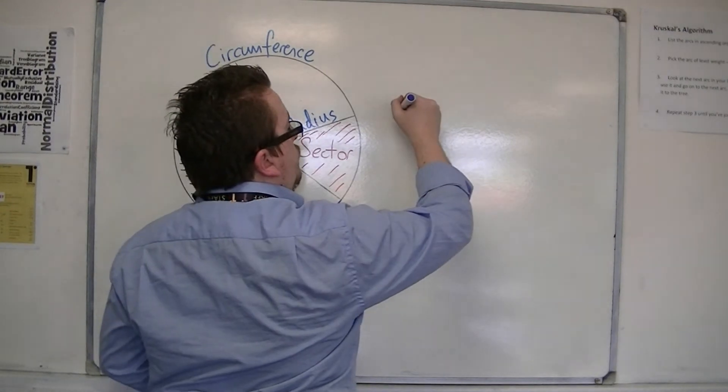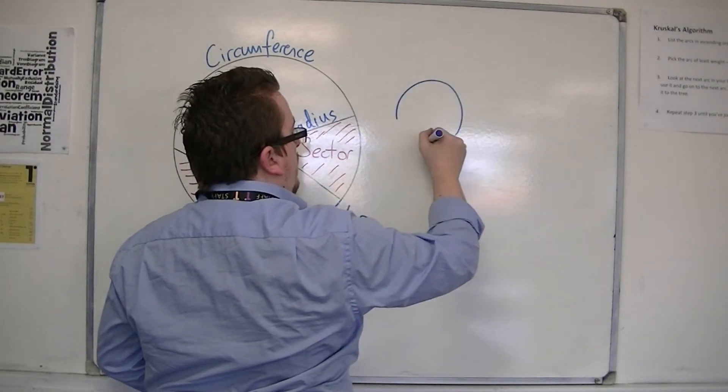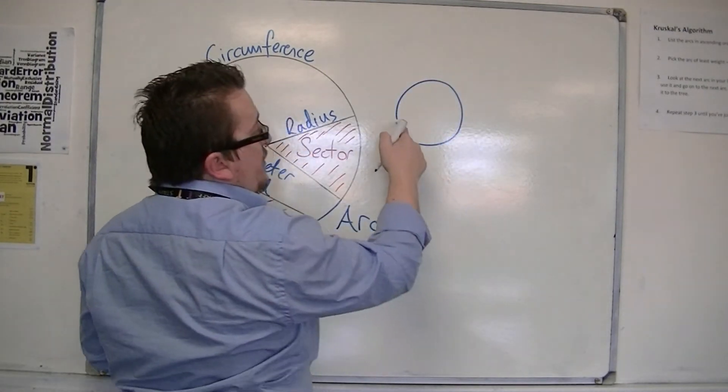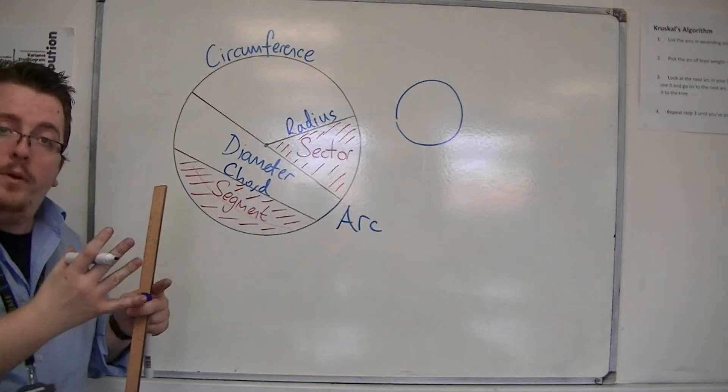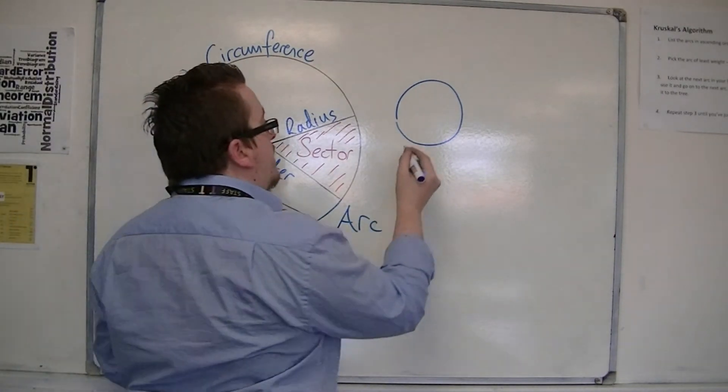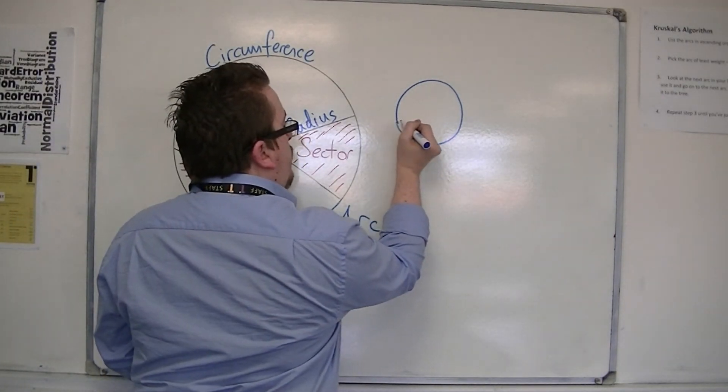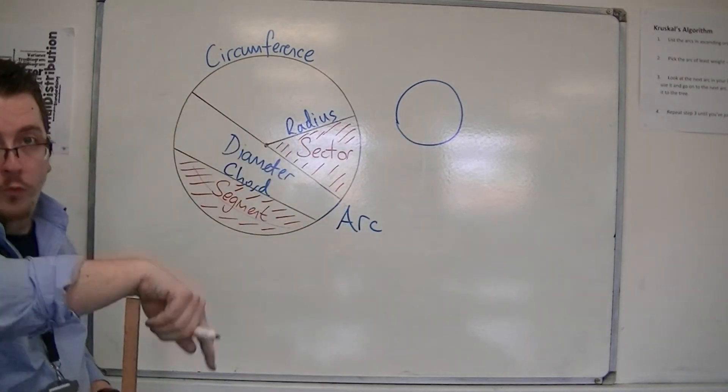So you could draw a circle that doesn't quite meet up, and that would still be an arc. But if I join those bits up, then I've got the whole circumference.